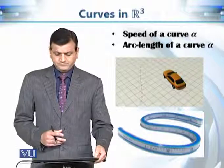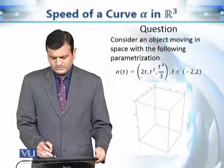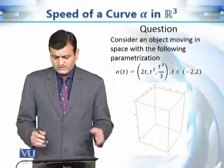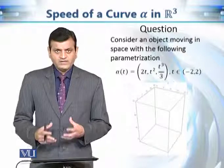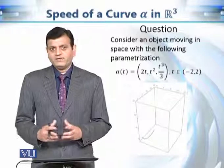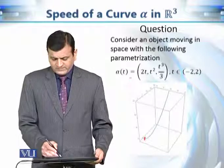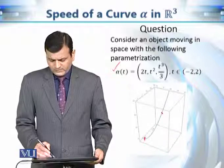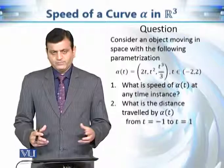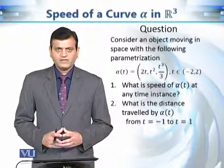Consider the function α(t) = (2t, t², t³/3). This α represents the trajectory of a moving object in R³. The questions we want to answer are: at any particular time t, what is the speed of that object? And if we want to find the arc length — the distance traveled by this object from t = -1 to t = 1 — how can we calculate that?